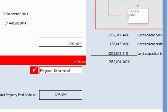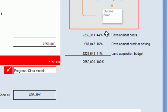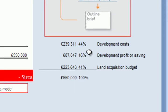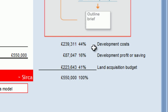We then looked at the impact of our choices on the main categories — the development costs. These are all the costs you would incur in carrying out the work to complete a four bedroom house ready for sale. There's also an element allowed for a developer's profit. The result is a total from which we deduct costs, leaving us with a budget for acquiring the land.